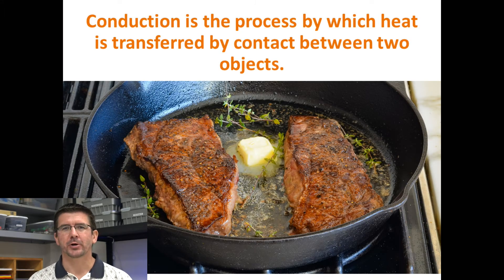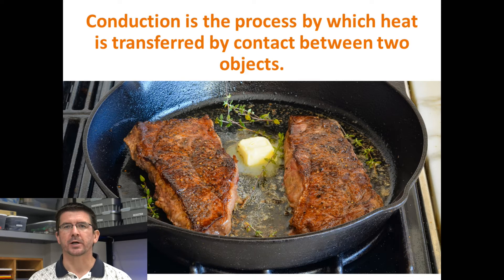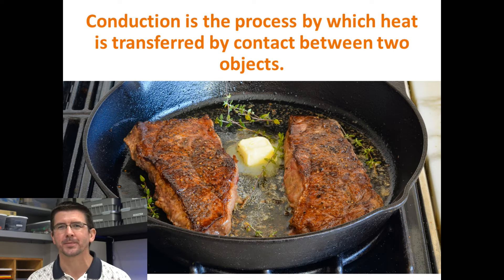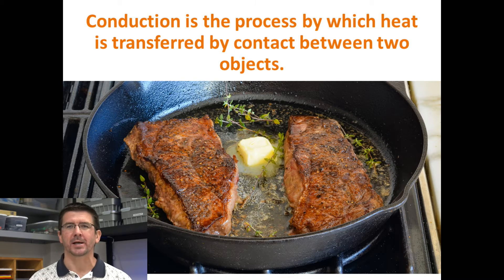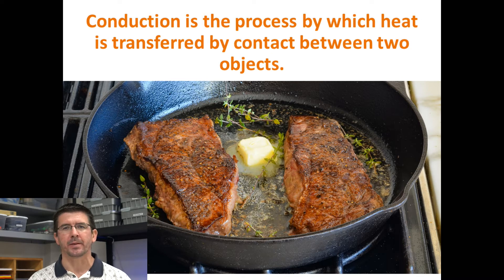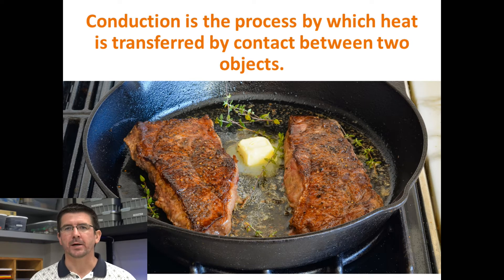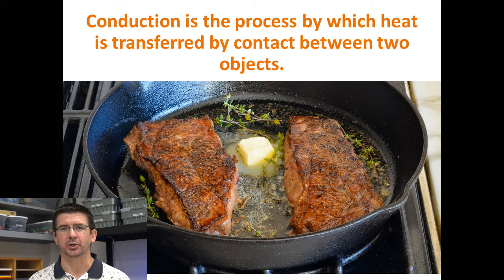Now the first method of heat transfer that we mentioned was called conduction. Conduction is a method of heat transfer that happens between two objects that are in direct contact with one another, two objects that are touching. You see in the picture here we've got the steak cooking in the pan. The heat is being transferred into the steak from the pan as the steak is touching the pan. So that direct contact is an example of what we call heat transfer by conduction.